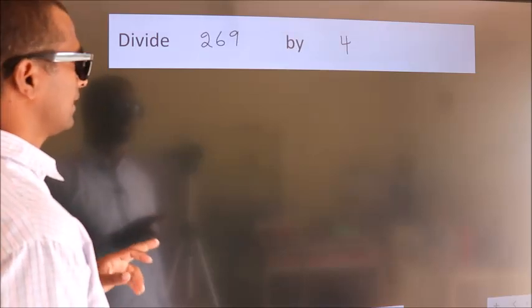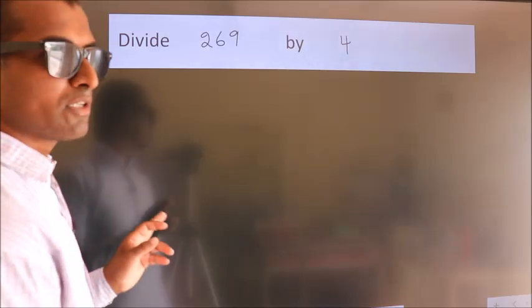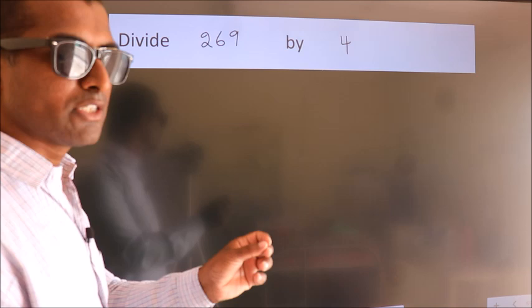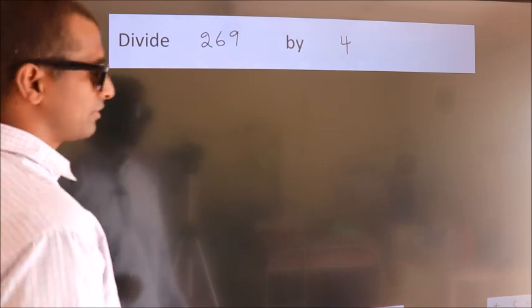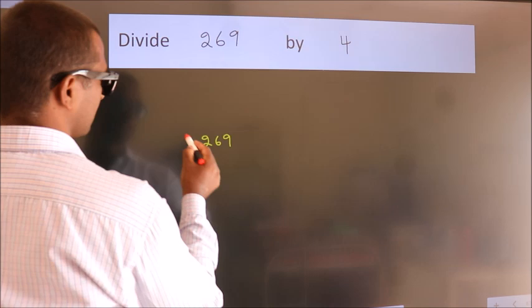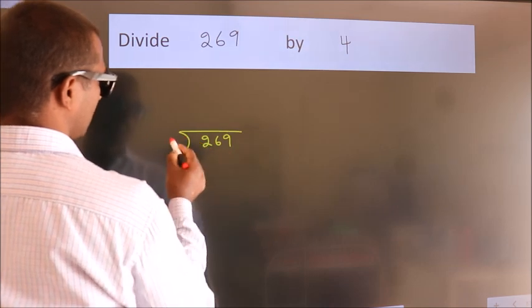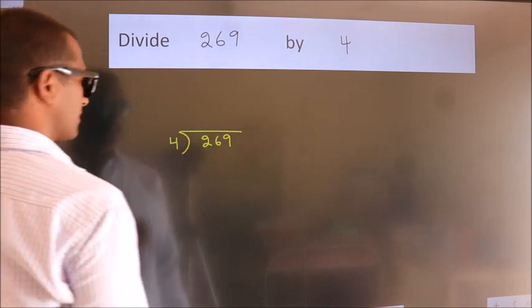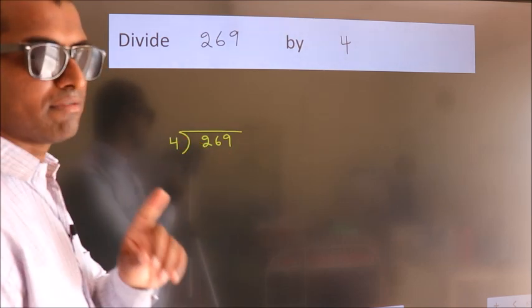Divide 269 by 4. To do this division, we should frame it in this way: 269 here, 4 here. This is your step 1.